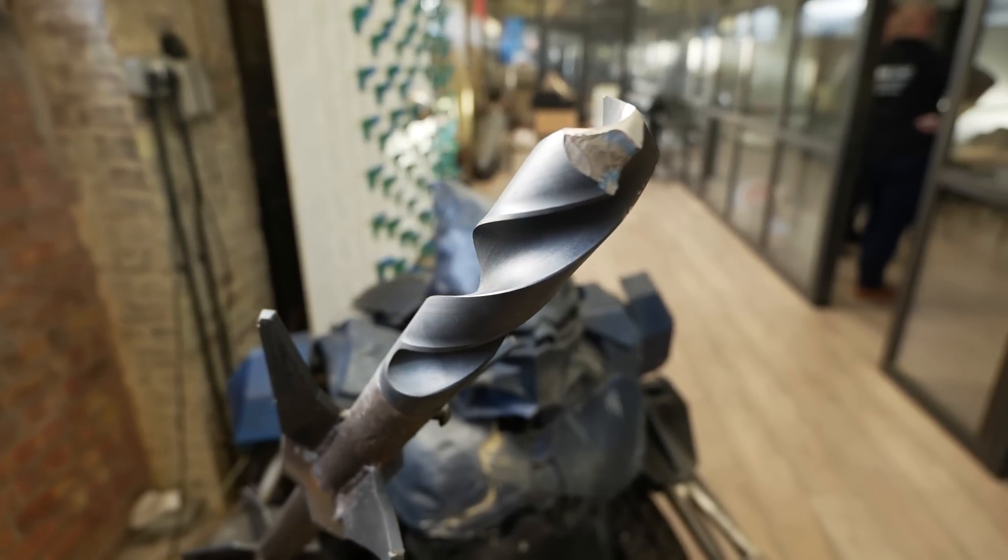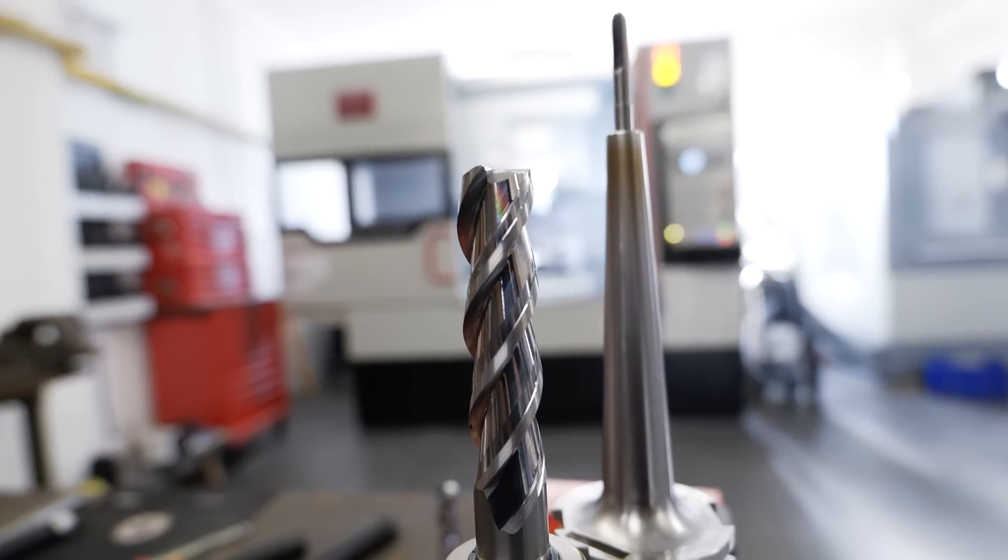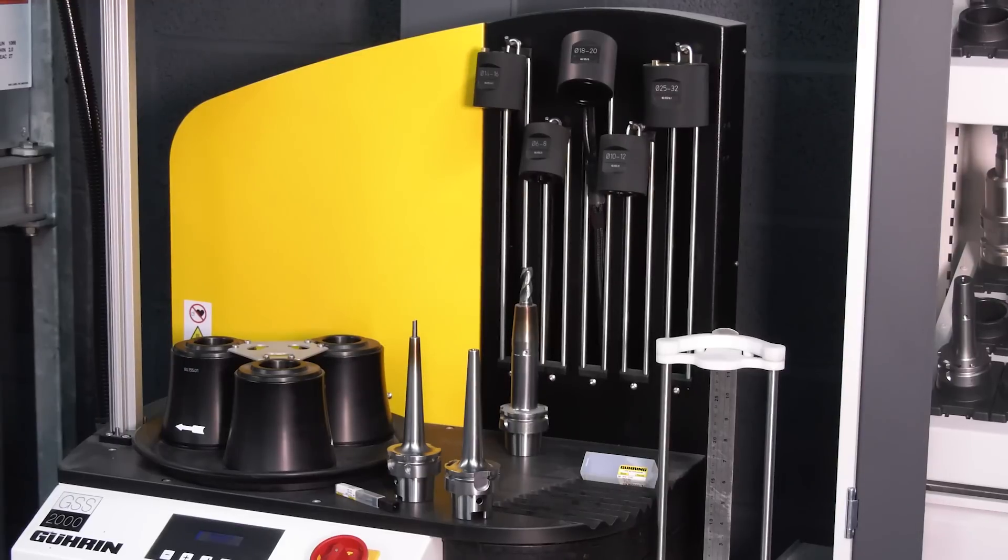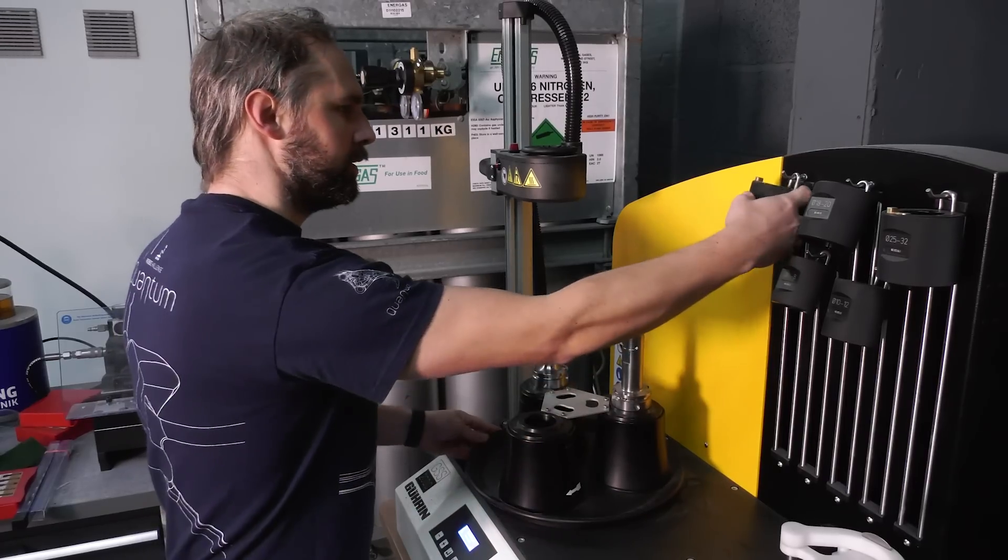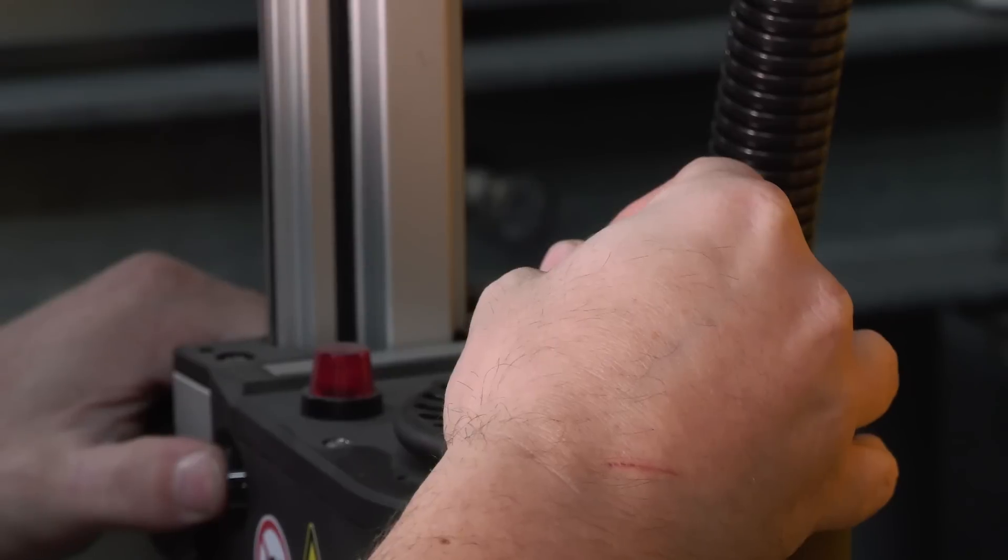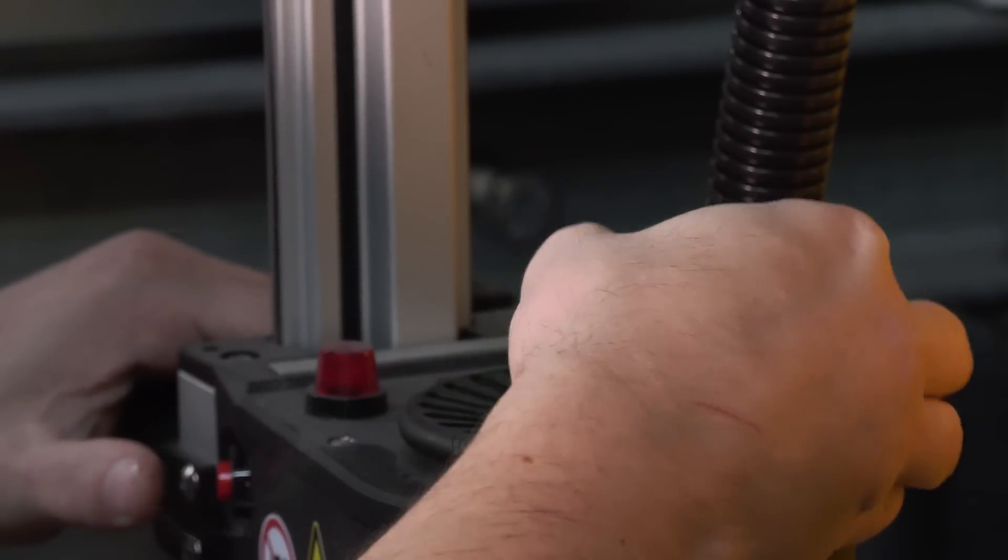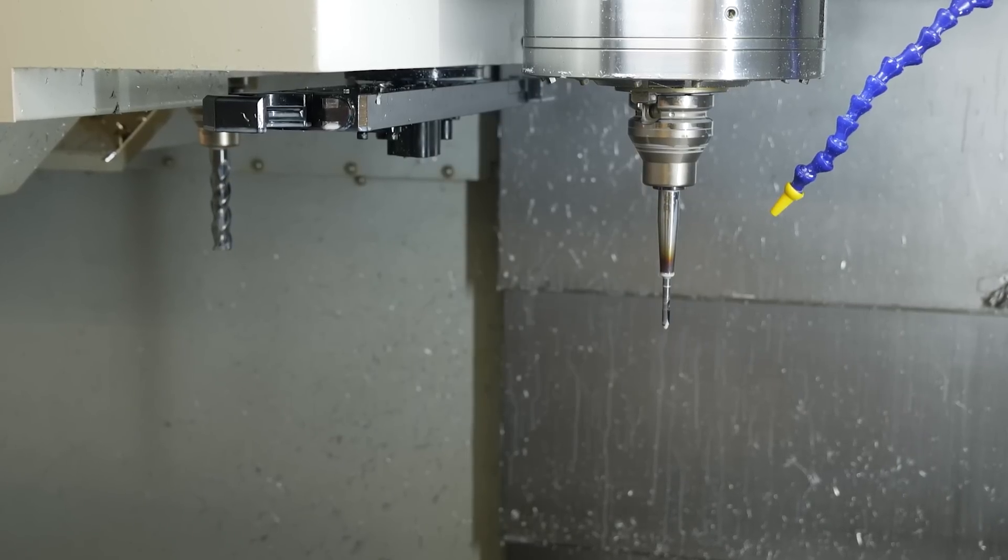They buy a complete array of tools from us. Right the way through from the tool holding, through to the shrink fit machine itself, through to the tool holders, the drills, taps, reamers, milling cutters, bespoke tooling - pretty well cross section. It covers most of the things that they do.